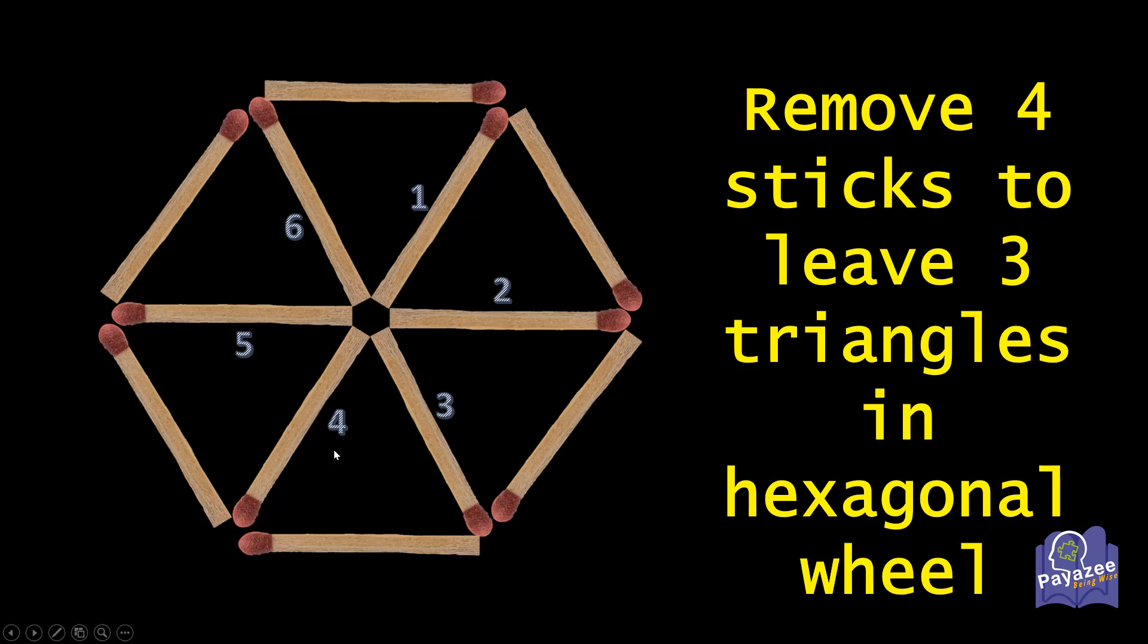So if there are no common sticks, then we would need total 18 sticks. But here we have 12 sticks. That means we have 6 fewer sticks. To form 2 triangles, the number of sticks is reduced from 6 to 5 because of one common stick.